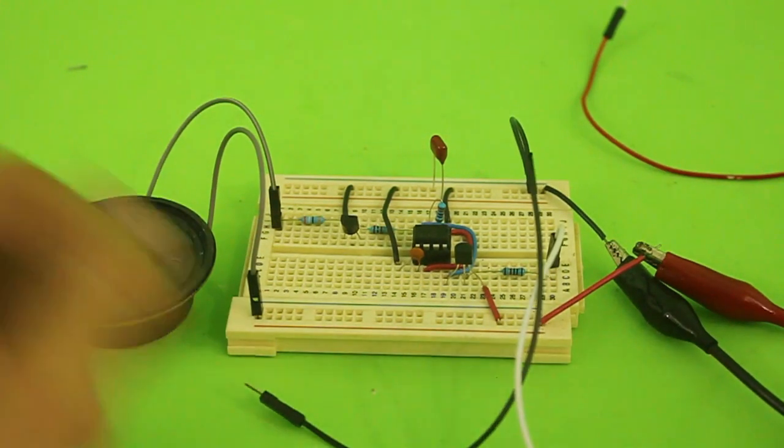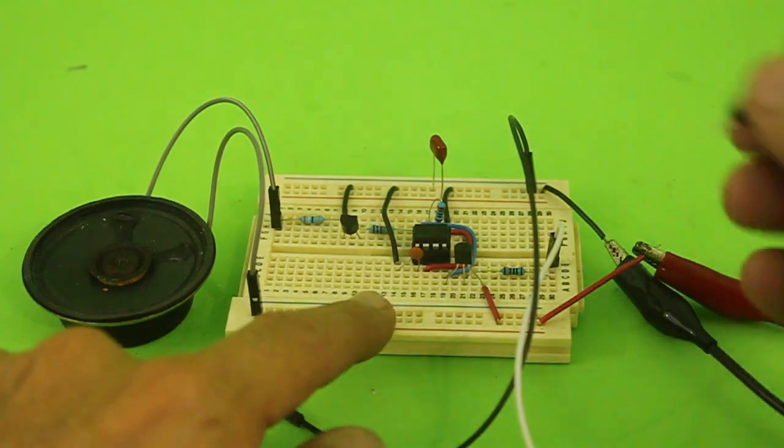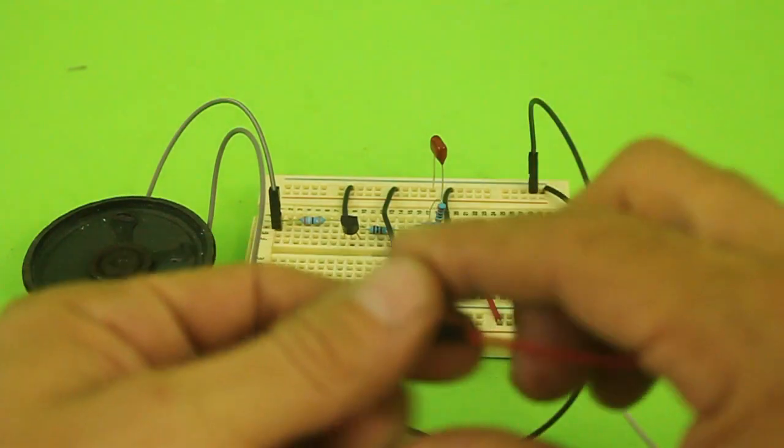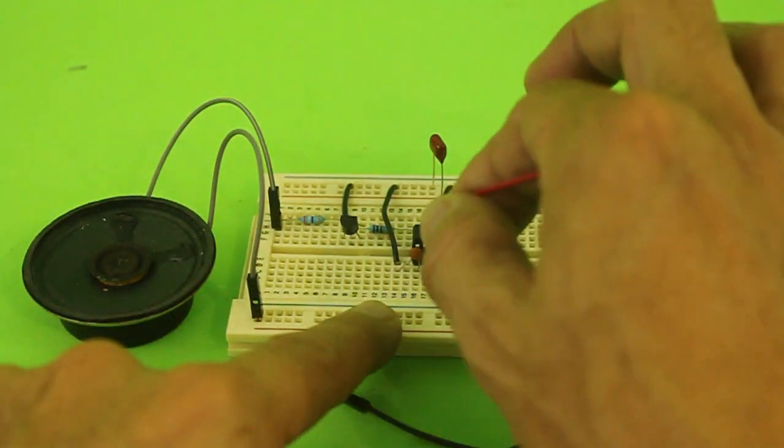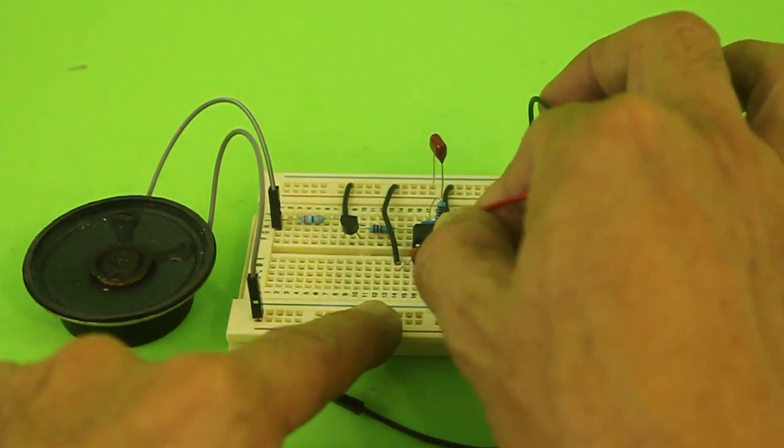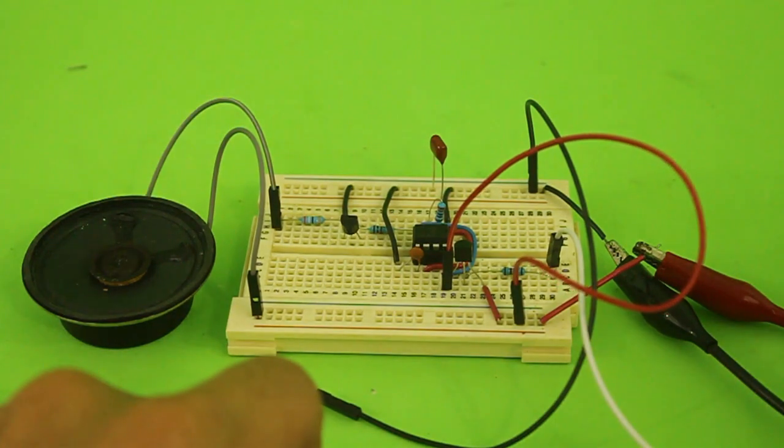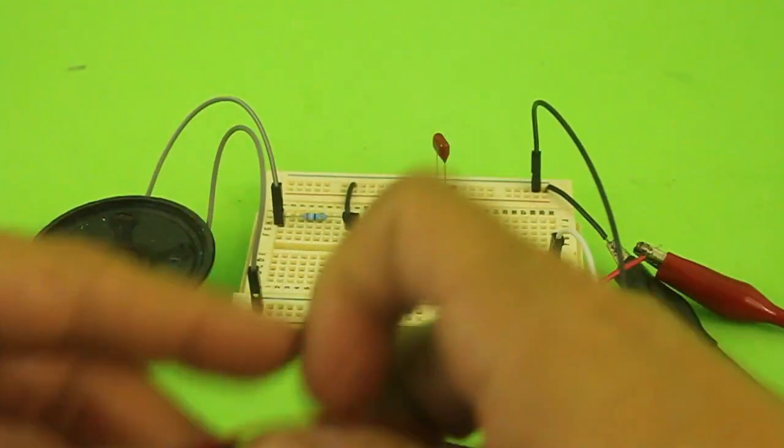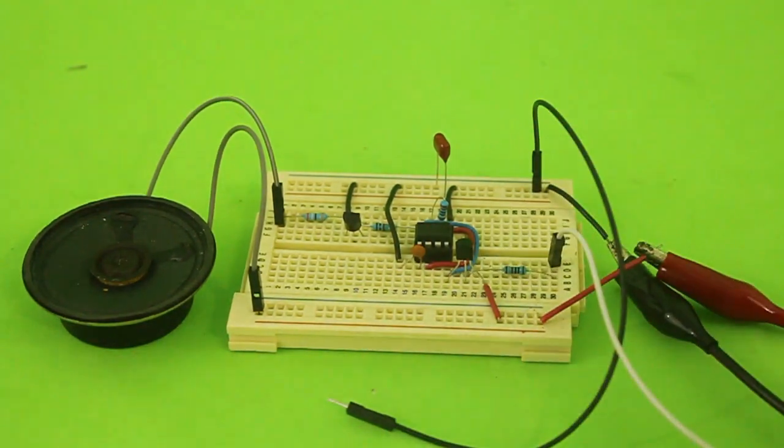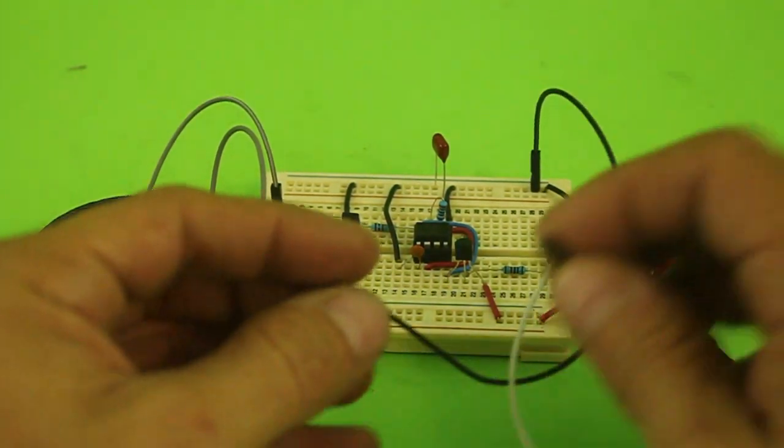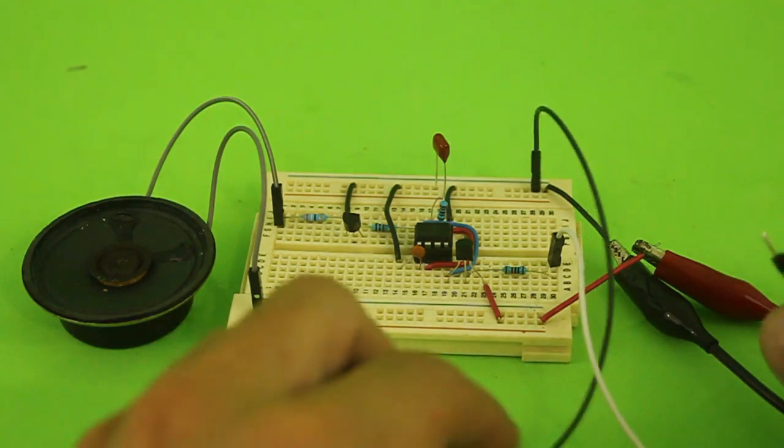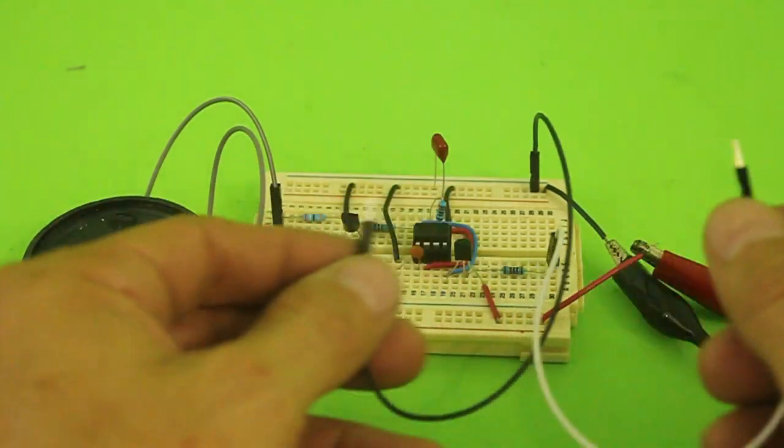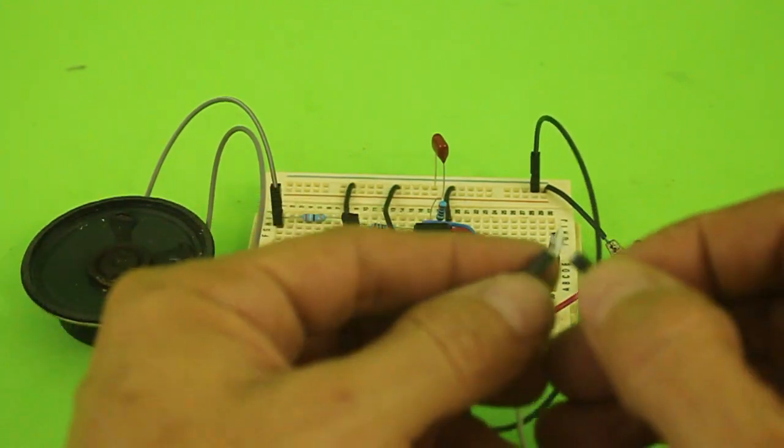And as I was telling you before, if we connect the positive directly to pin 8 and 4 of the timer, we get a continuous sound. So the purpose of the PNP transistor is to prevent the continuous sound and to make sound only when we ground the transistor's base.